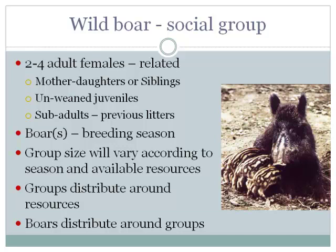Associated with the core group are unweaned juveniles from this year's litters and sub-adults from previous litters. As sub-adults reach adulthood, they break off and form their own social group. Boars aren't associated with these core groups all the time — they only associate with females around breeding season. Group size varies according to season and available resources, with groups distributing geographically around resources and boars distributing around the groups.